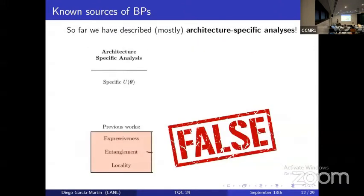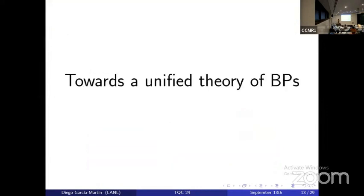These results are great, but the problem is that they are mostly architecture-specific and not true in general — they don't hold for any circuit architecture. The goal of a unified theory of barren plateaus is: given any quantum circuit, any state ρ, any observable, can I predict what the variance will be? Is there going to be exponential concentration or not?